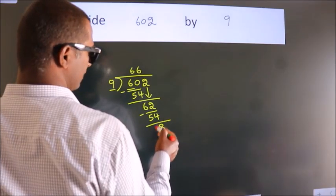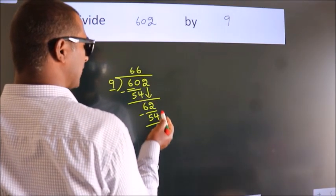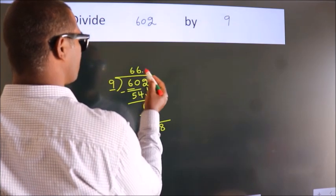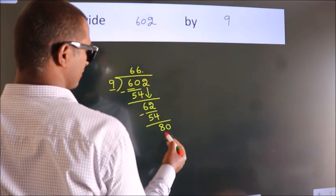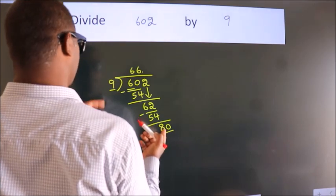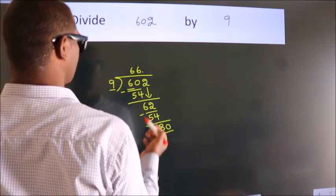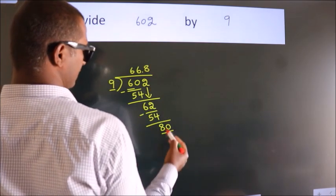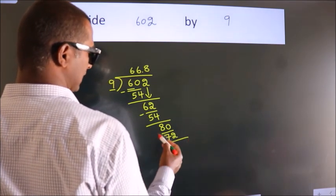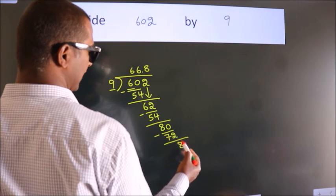After this, no more numbers to bring down. So what we do is, we put a decimal point and take 0. So, 80. A number close to 80 in the 9 table is 9×8=72. Now we subtract. We get 8.